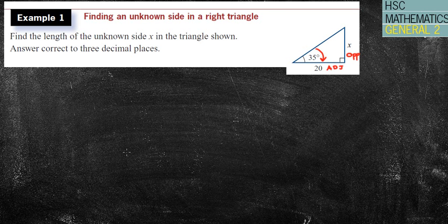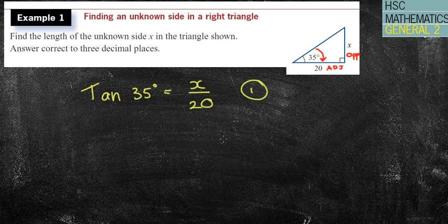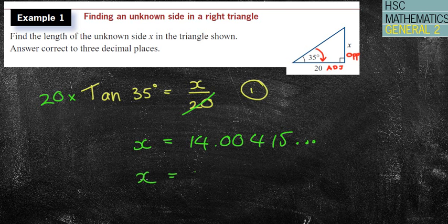So which rule uses adjacent opposite? That's going to be our tan rule. So tan 35° equals our opposite over our adjacent value. That's pretty much your first mark usually. The next step is to get x by itself. We do that by getting rid of the divide by 20 by timesing by 20. So we get x equals 14.00415... Now the question has specified for three decimal places. So 14.004, that's my third decimal place. So I'm going to just put units and that's as easy as that.